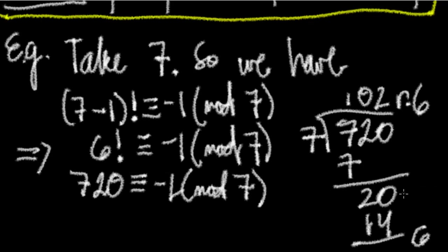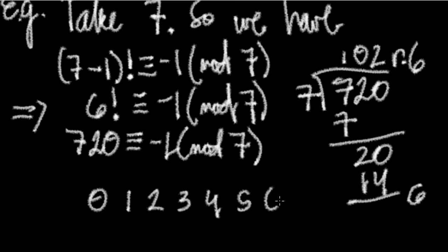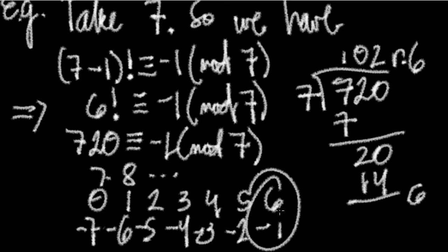Now, what does remainder 6 mean in congruence terms? Let's imagine the universe of mod 7: we have 0, 1, 2, 3, 4, 5, 6, then 7 starts again. Negative 1 sits at position 6 in this cycle, since negative 7 is a multiple of 7. So positive 6 is equivalent to −1 mod 7. Therefore the remainder 6 is indeed equivalent to −1.